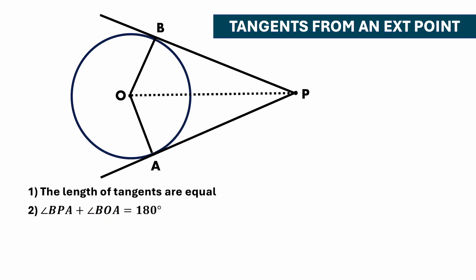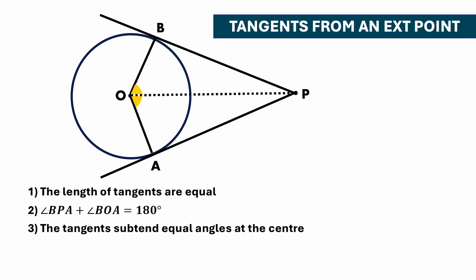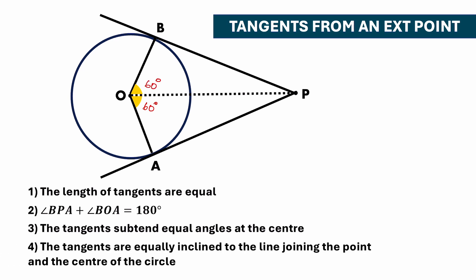Now joining OP, the tangents subtend equal angles at the center, so angle AOP equals angle BOP. If angle AOP is 60 degrees, then angle BOP is also 60 degrees. Similarly, the tangents are equally inclined to the line joining the external point and the center, so angle APO equals angle BPO. If angle APO is 30 degrees, then angle BPO is also 30 degrees.